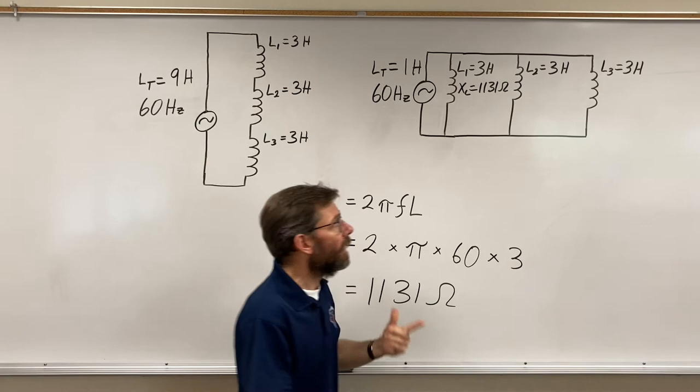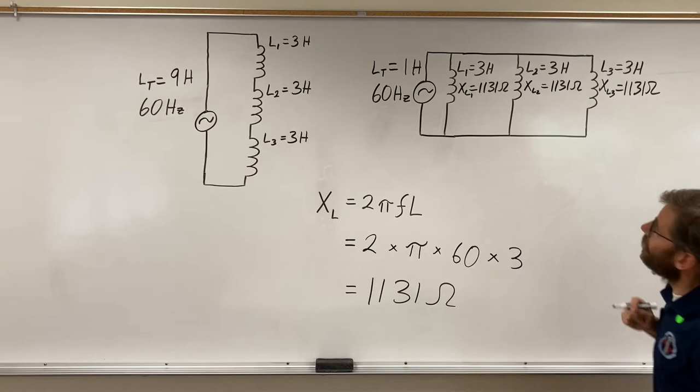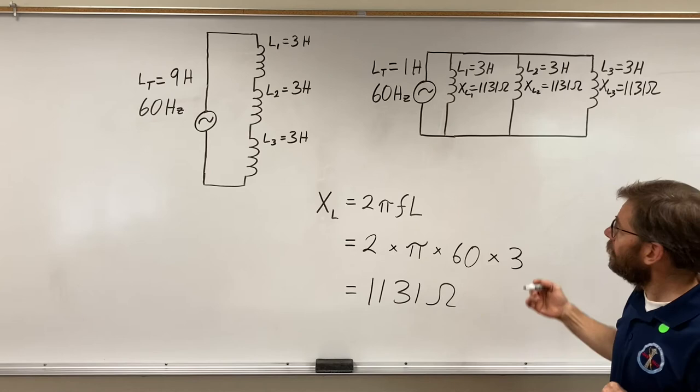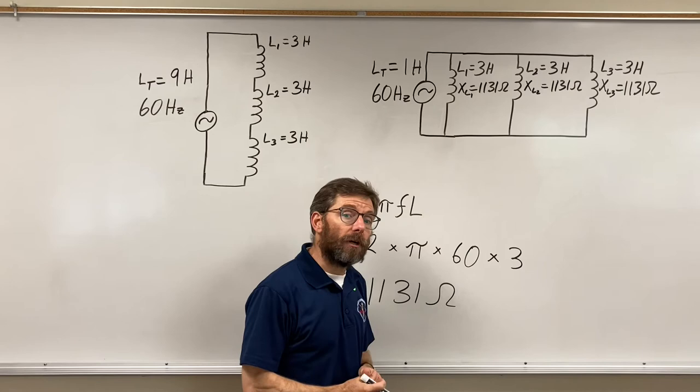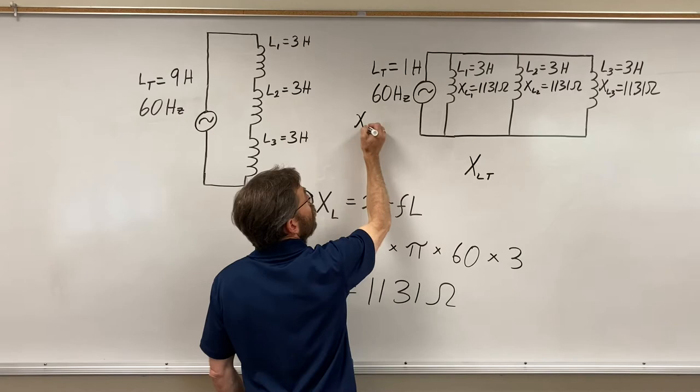Let's try it and see. So my XL1 was that, my XL2 is also 1131, 1131. Now how do you add ohms? You add ohms the same way you always added ohms in a parallel circuit. In a parallel circuit you would use the inverse inverse operation or product sum if you just had two. Let's see what that becomes. My XL total: 377 ohms.